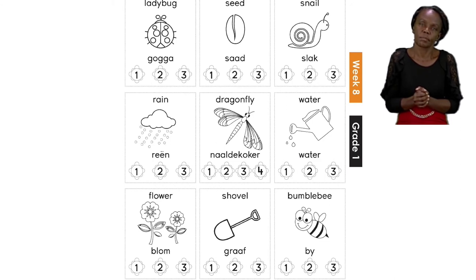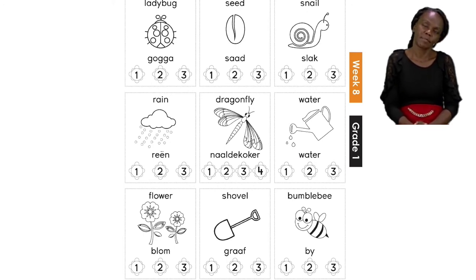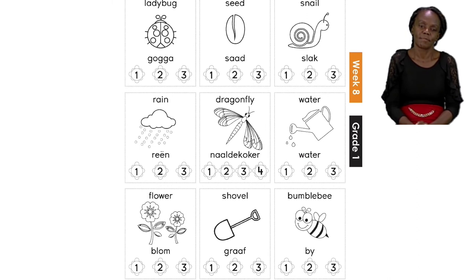Let's take a look at the first picture — we have a picture of a ladybug. We need to know how many syllables we are going to be using. Let's say the word: ladybug. Now let's break the word into syllables. I want you to clap your hands with me: la-dy-bug, la-dy-bug. Good job! It sounds like we have three syllables because we are saying la-dy-bug — and that is three. So you are going to color the third flower.